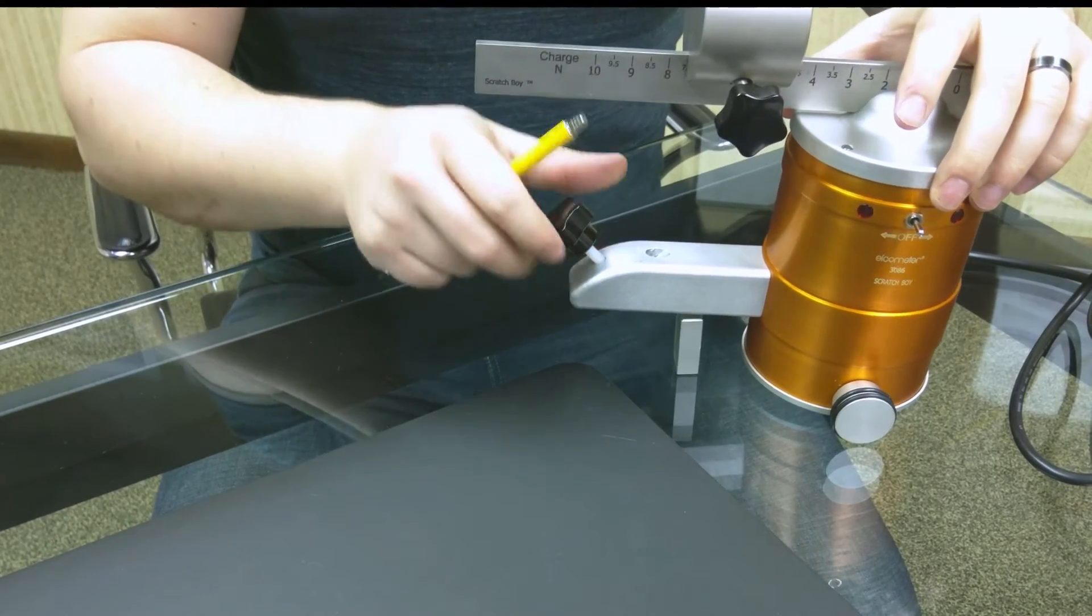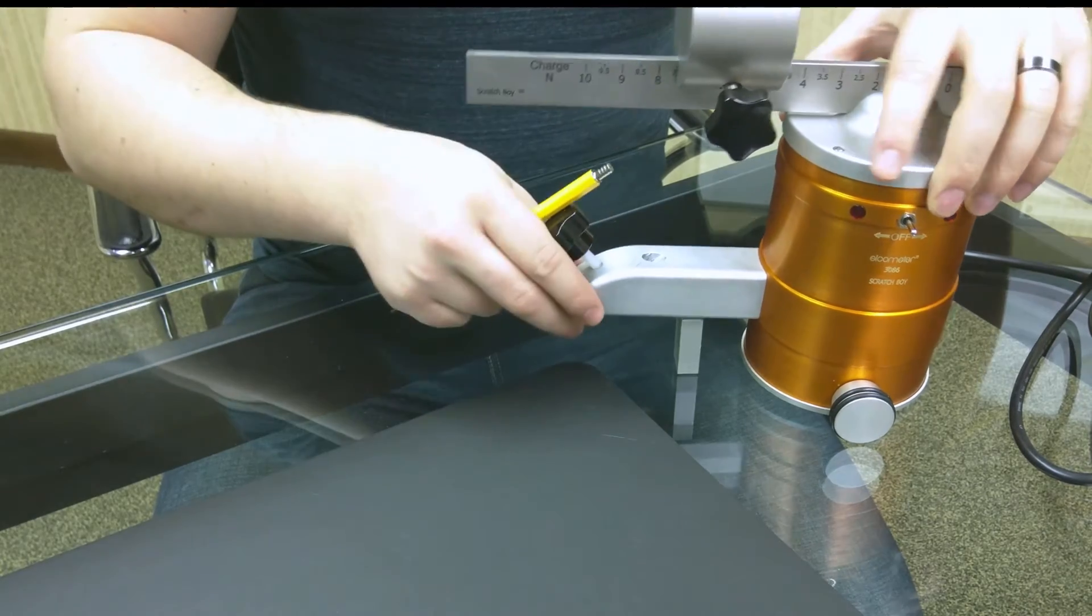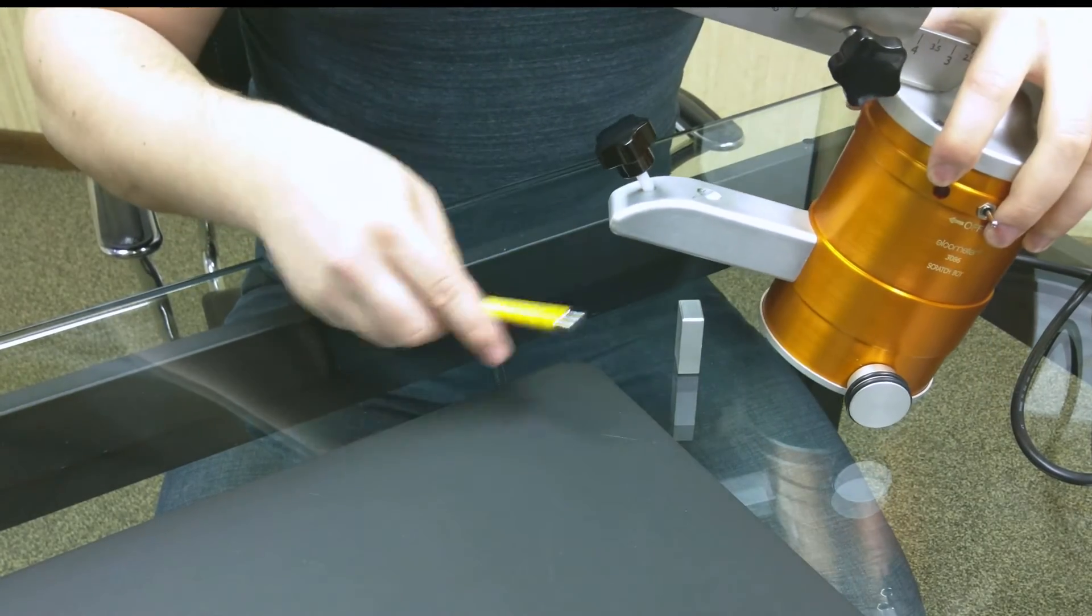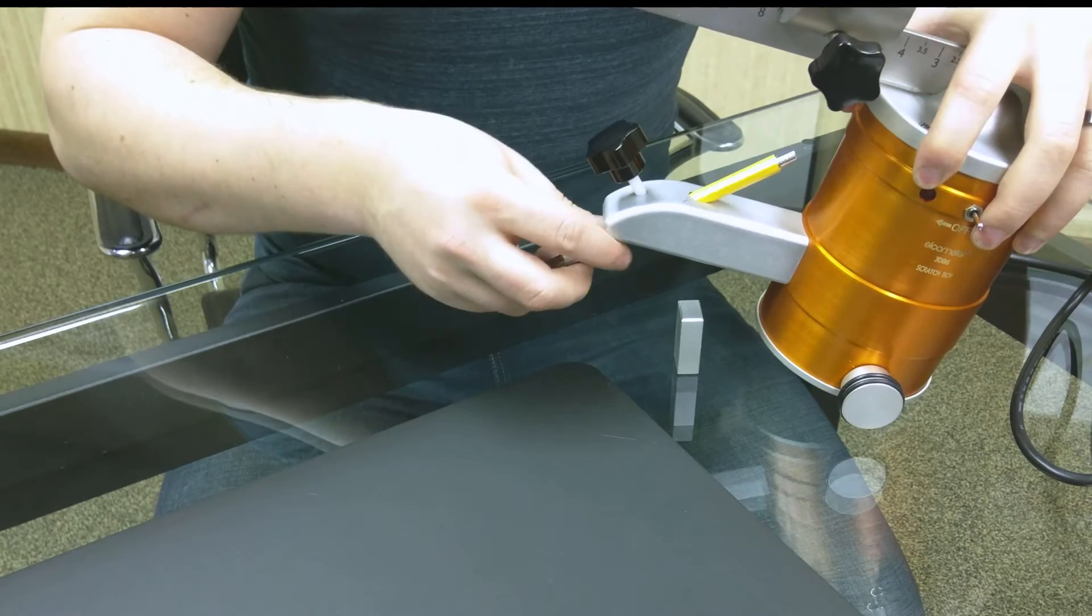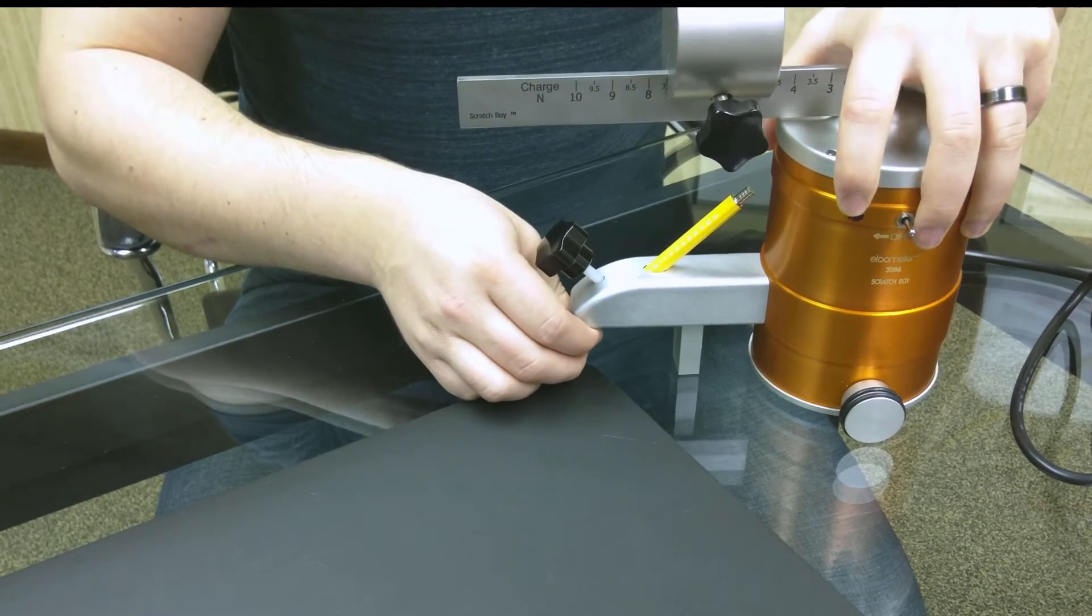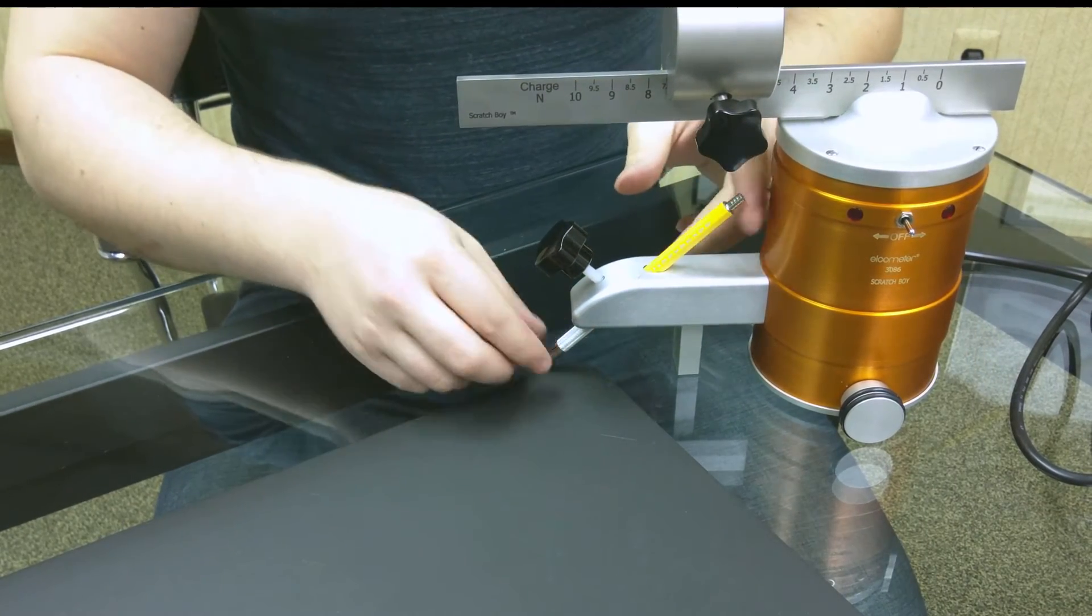Now that our lead is prepared, we insert it into the holder by loosening the thumb screw and sliding it through the bottom of the tester mount at the 45 degree angle necessary for a pencil hardness test in accordance with ISO standard 15184.